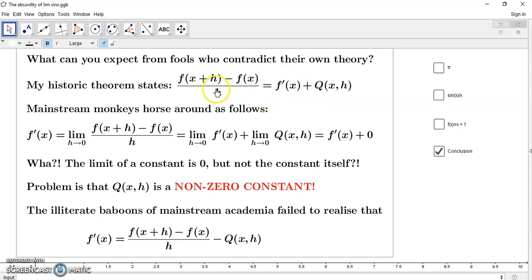But suddenly, the limit of this constant difference is no longer the difference, it's zero. What? The limit of a constant is zero but not the constant itself? Problem is, people, that this difference is a non-zero constant. And if you have to put zero in here, this identity is no longer true.